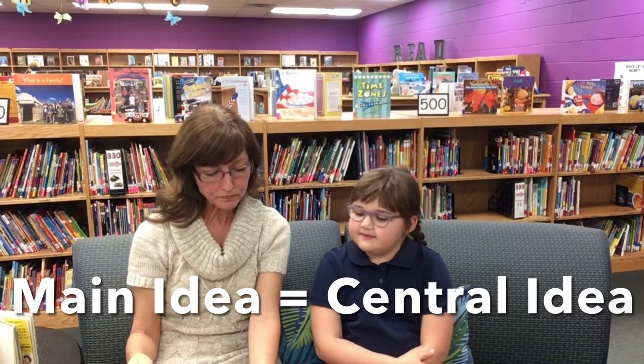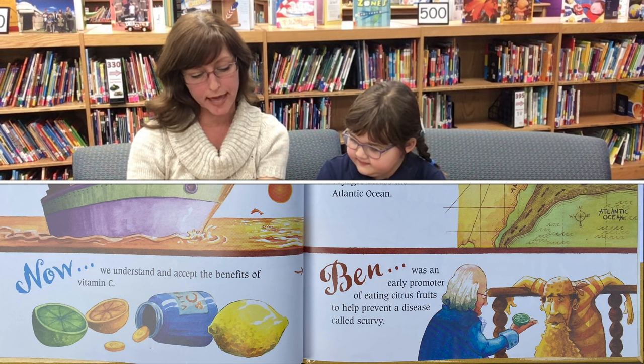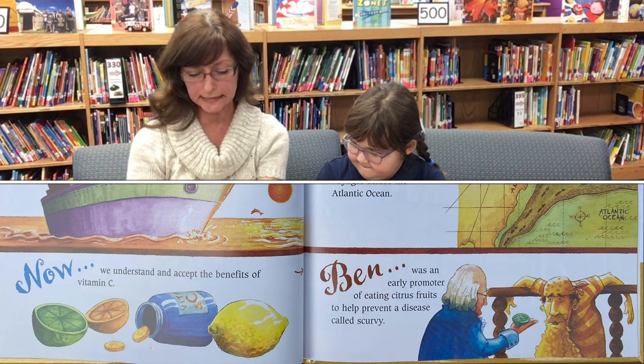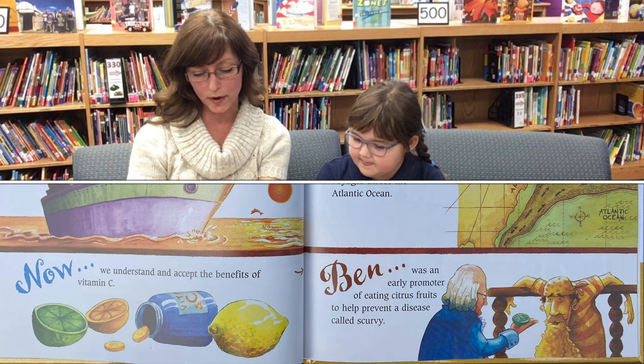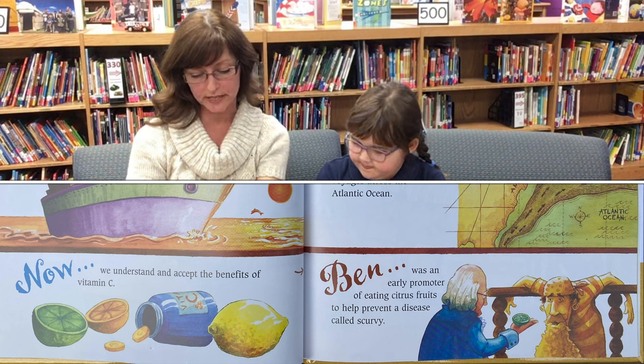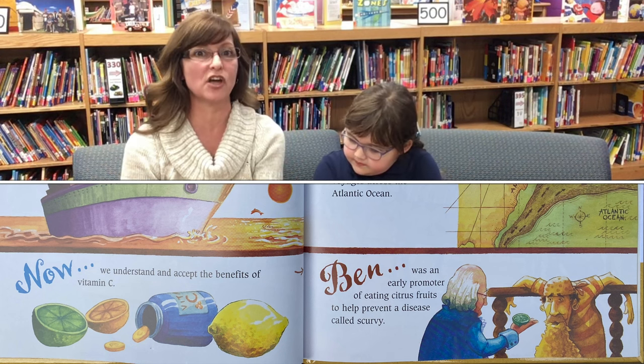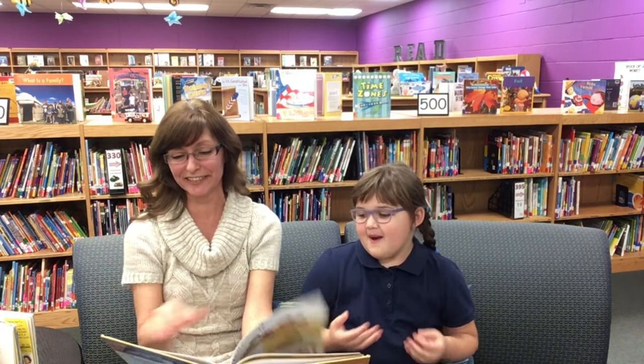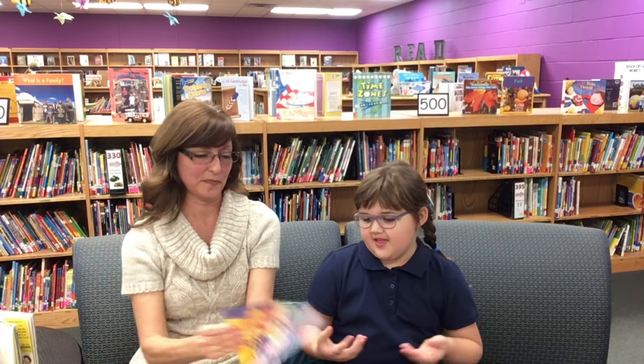The main idea might be about him inventing stuff! When you hear and read things a lot in the story, there's your main idea — or central idea; they mean the same thing. 'Now we understand and accept the benefits of vitamin C. Ben was an early promoter of eating citrus fruit to help prevent a disease called scurvy.' I don't want that disease! Ben noticed the benefits — he didn't invent vitamin C, but he noticed how it helped.